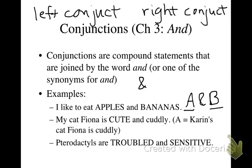So the next sentence, 'My cat, Fiona, is cute and cuddly.' We can use C to stand for 'Karin's cat, Fiona, is cute.' But then we couldn't use C again for the other simple statement, 'Karin's cat, Fiona, is cuddly,' because we've already used C for cute. So we're going to use the letter A to stand for 'Karin's cat, Fiona, is cuddly.' So the whole sentence would be C ampersand A.